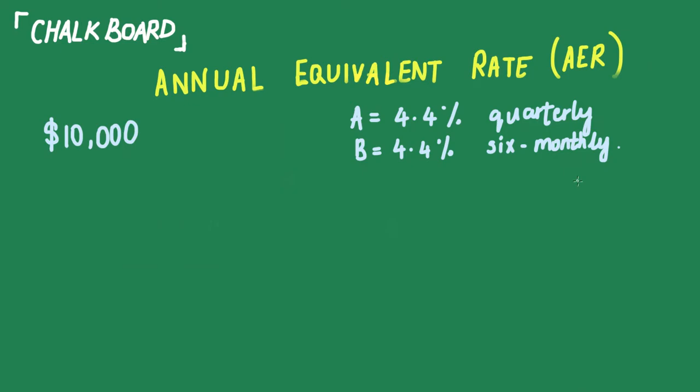How would you determine the better savings account, or what will give you the better rate of interest for your principal? To calculate this, we use the AER equation, which is straightforward: AER equals (1 plus rate) to the power of n, which represents the period and frequency with which it's paid.